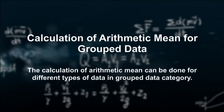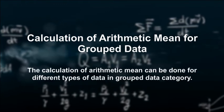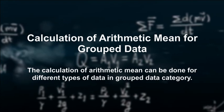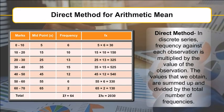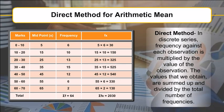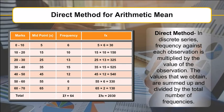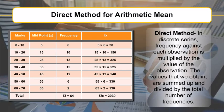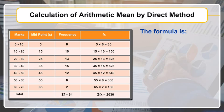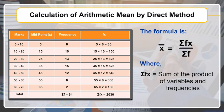For grouped data — Discrete series, Direct method: the frequency against each observation is multiplied by the value of the observation. The resulting values are summed and divided by the total number of frequencies. The formula is: x-bar = summation(fx) / summation(f), where summation(fx) is the sum of the product of variables and frequencies, and summation(f) is the sum of frequencies.